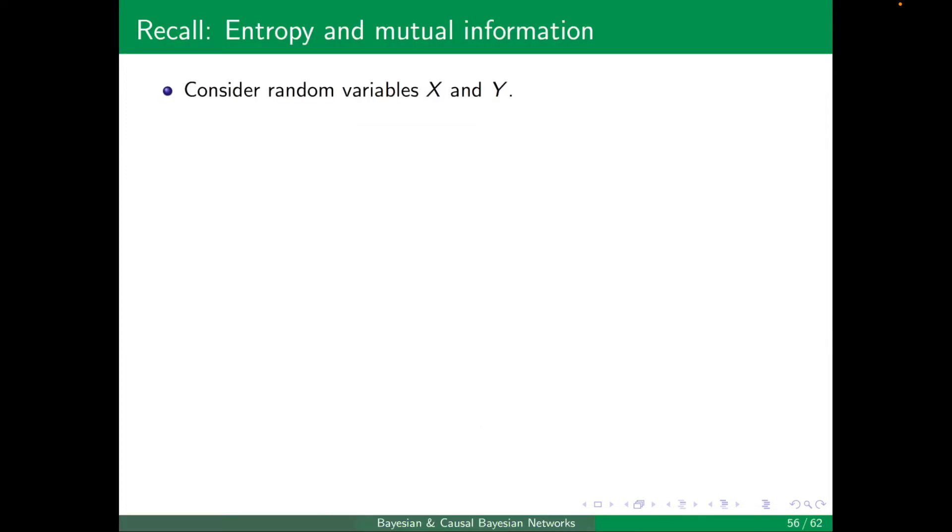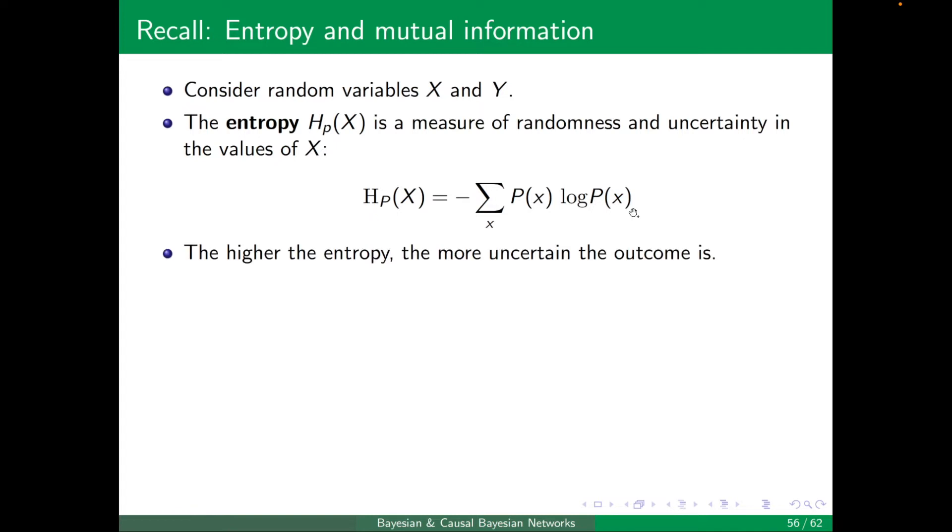Okay, recall entropy and mutual information. Consider random variables X and Y. The entropy H_P(X) is a measure of randomness and uncertainty in the values of X, and it's defined as minus the summation over x, the values of x, of P(x) times log P(x). The higher the entropy, the more uncertain the outcome is.